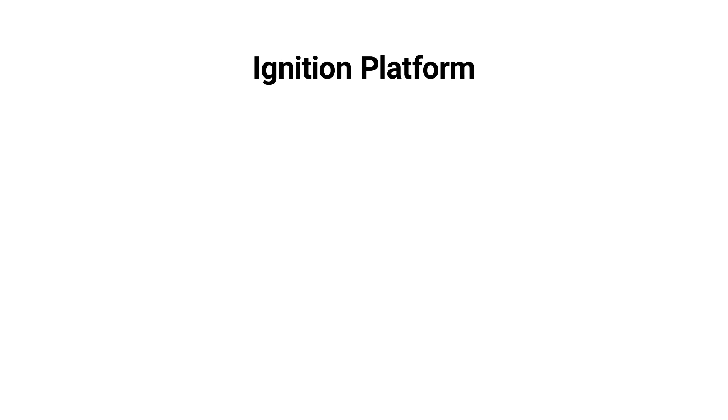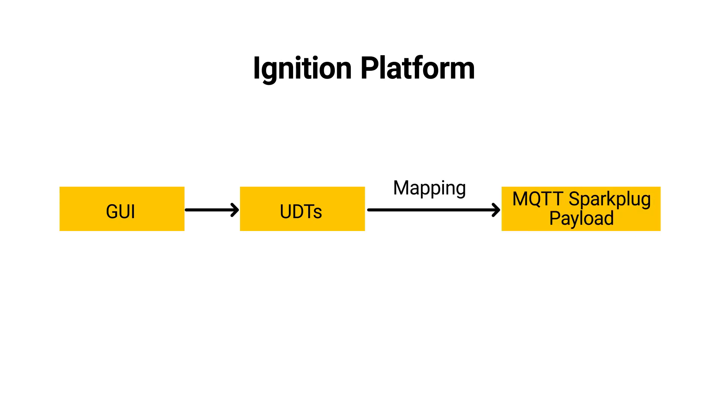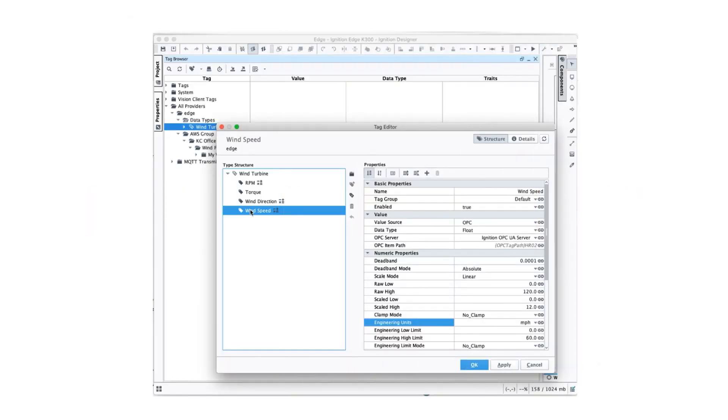For example, in Inductive Automation's Ignition platform, you can use the graphical user interface and native user-defined types to build your digital model. The platform maps the UDT model to your MQTT Sparkplug payload structure. Here is an example of what our wind turbine digital model definition would look like on the Ignition platform. Once you have created your wind turbine digital model on a platform like Ignition, you can configure instances of your UDTs for each physically existing wind turbine in operation, which essentially becomes your digital twin that you can start updating with real-time data.